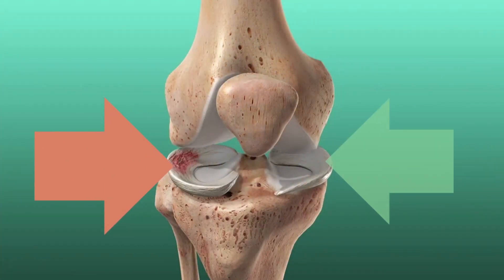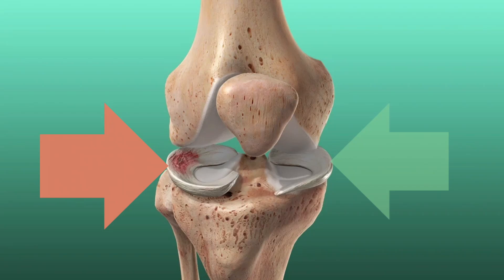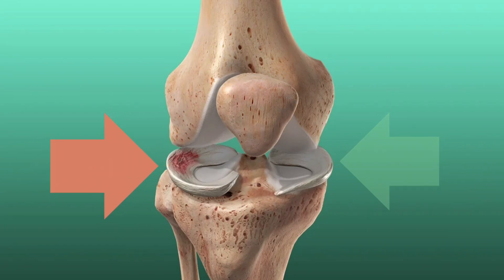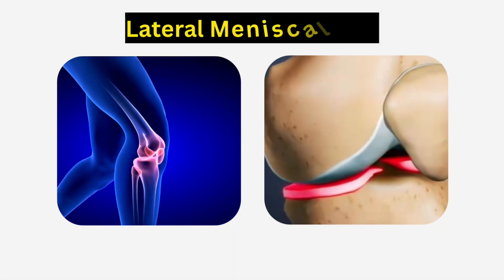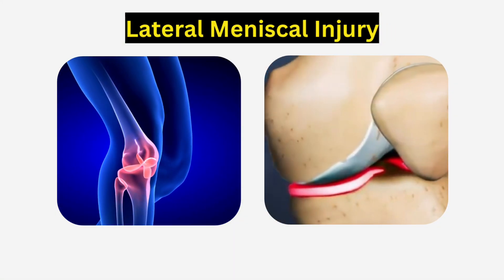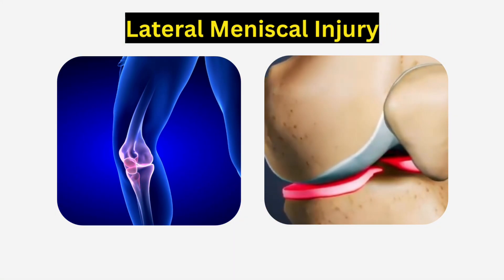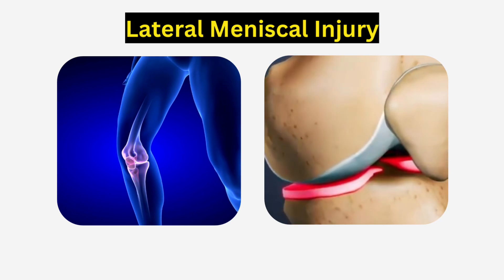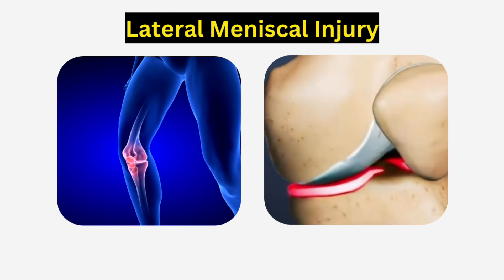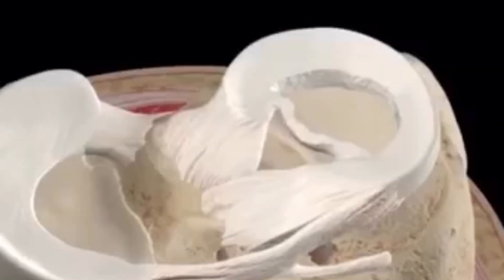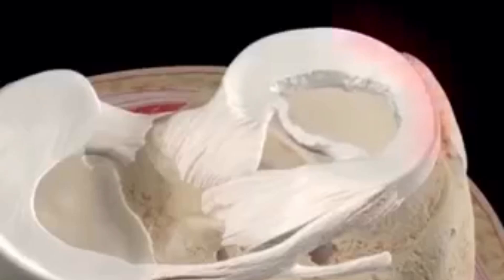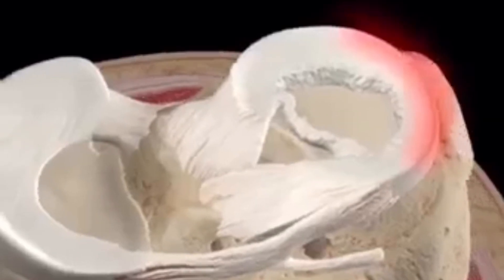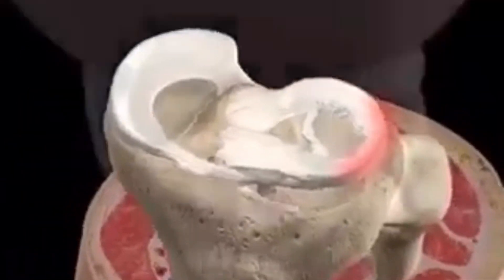The meniscus is a pad of C-shaped cartilage in the knee that absorbs shocks. The knee joint has two menisci, lateral and medial. A lateral meniscus tear is a common sports injury, usually caused by a twisting motion or degenerative changes in the knee. A longitudinal or bucket-handle tear may occur, leading to intermittent knee locking along with lateral knee pain and swelling.